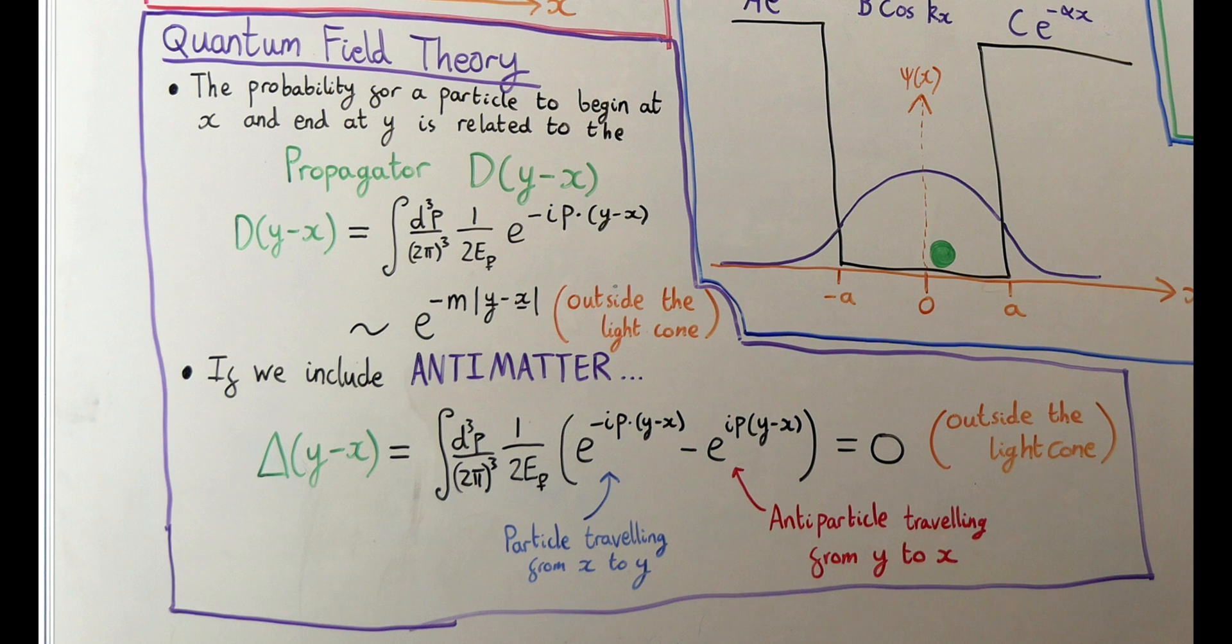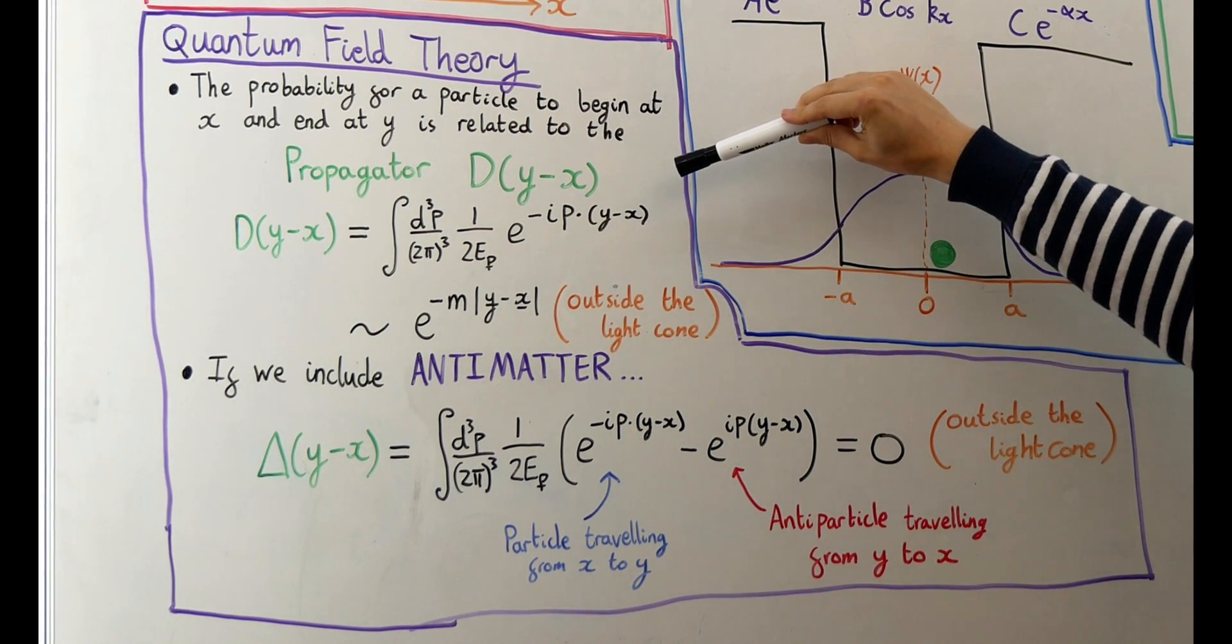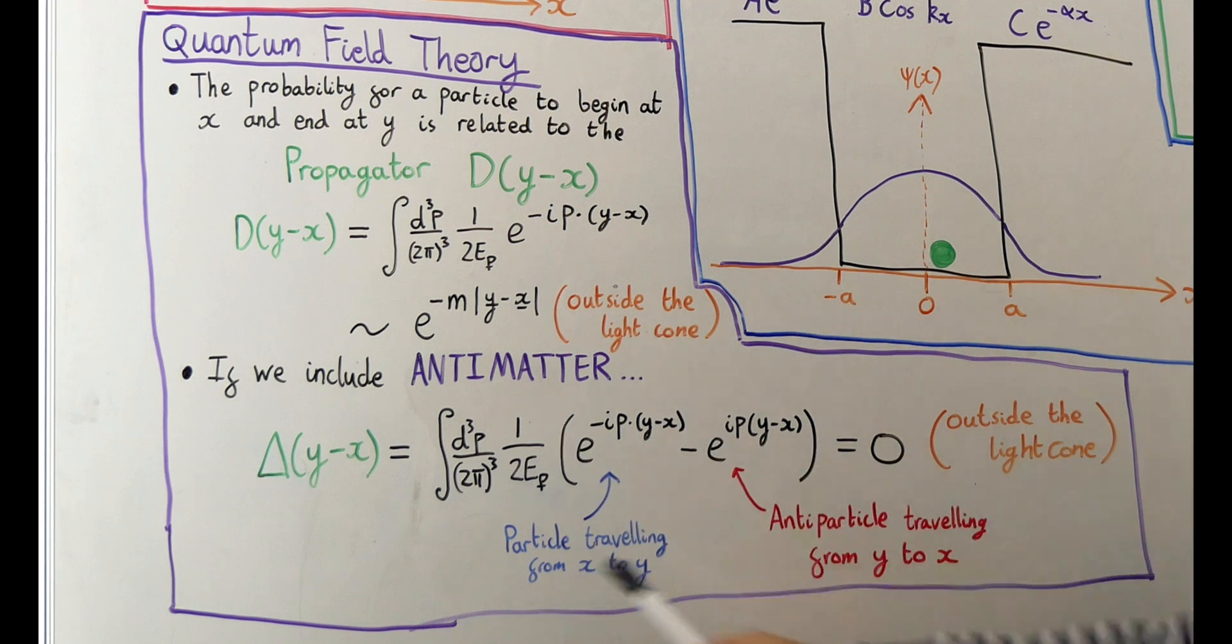If we introduce antiparticles into our theory, it changes what the propagator looks like. Without antiparticles, our propagator looked like this. But if we include antiparticles, our propagator ends up looking like this. It now has two different terms. We can interpret one of the terms as being the probability that you find a particle travelling from x to y, and the other the probability of an antiparticle travelling from y to x. Now, if the two points x and y are both inside the light cone, then this whole expression is non-zero. This means that particles or antiparticles can travel between any two points inside their light cone, as we'd expect.